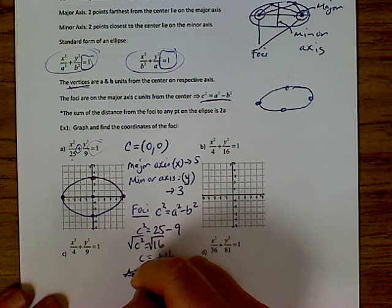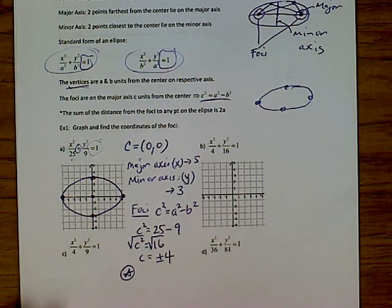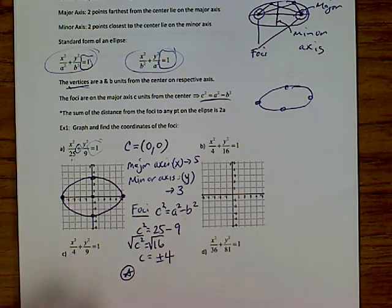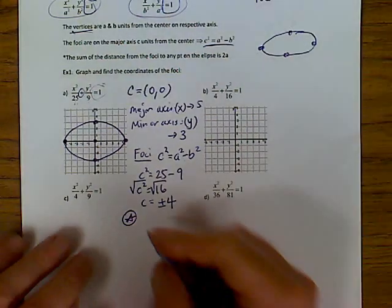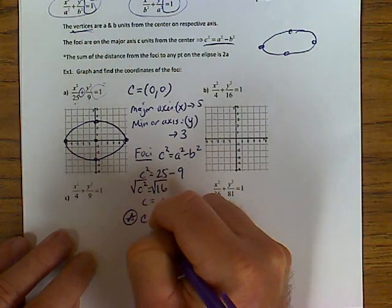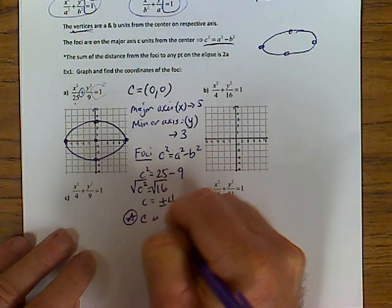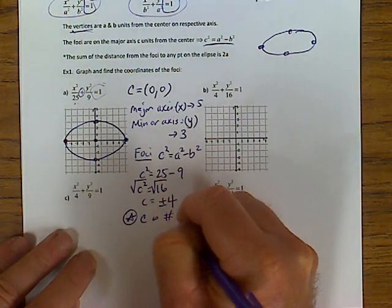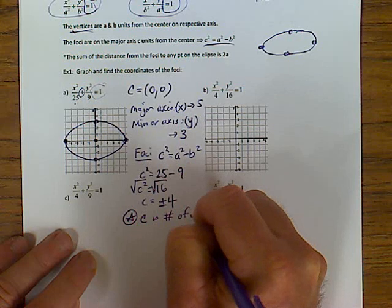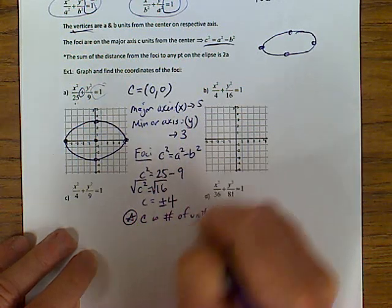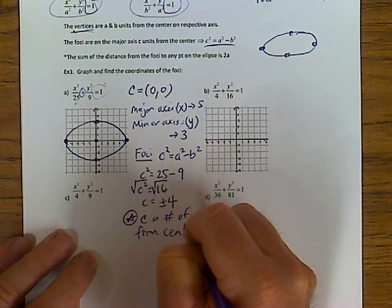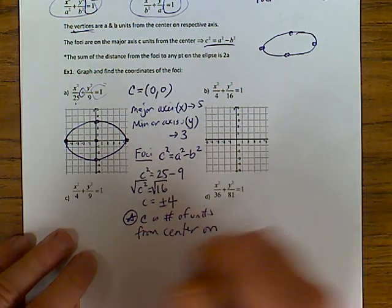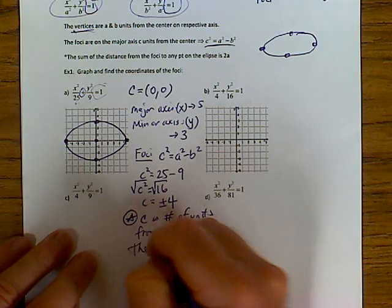This is very, very important — make sure you get this note and write it down: c is the number of units from the center on the major axis.